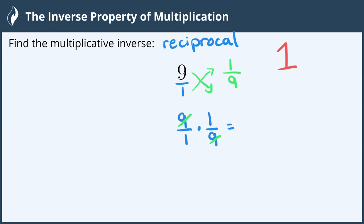9 divided by 9 is 1. 1 divided by 1 is also 1. 1 times 1 is 1 and 1 times 1 is 1.